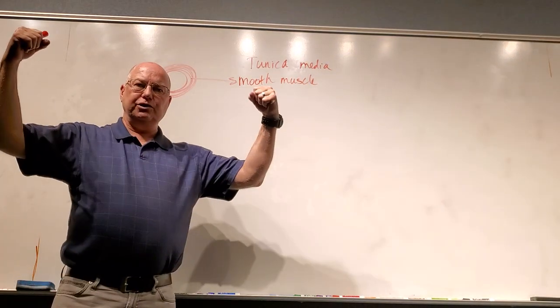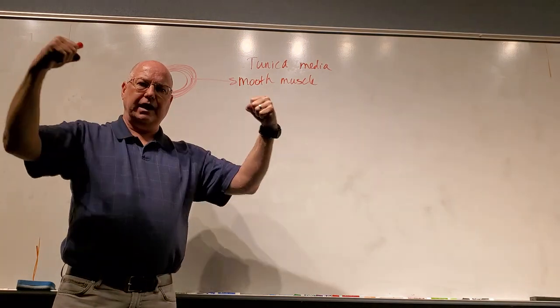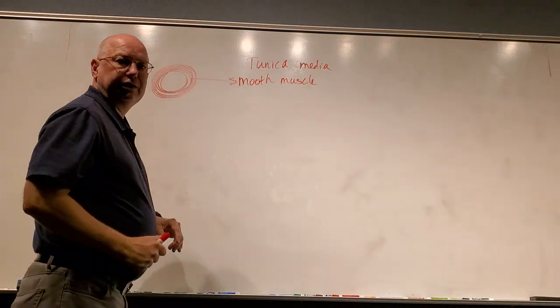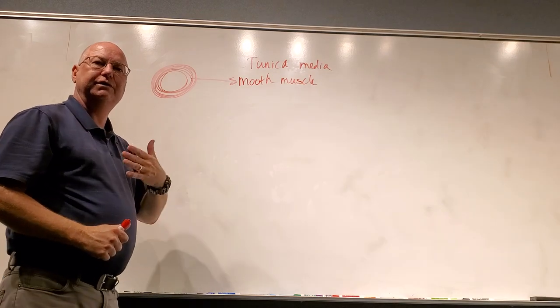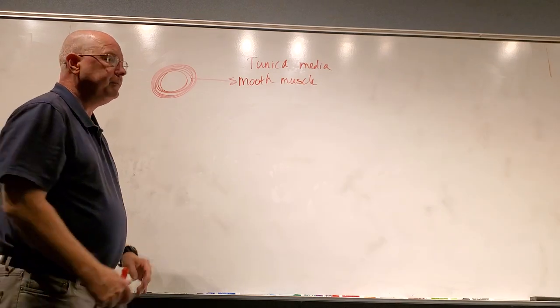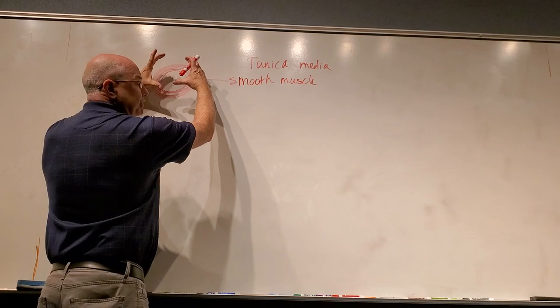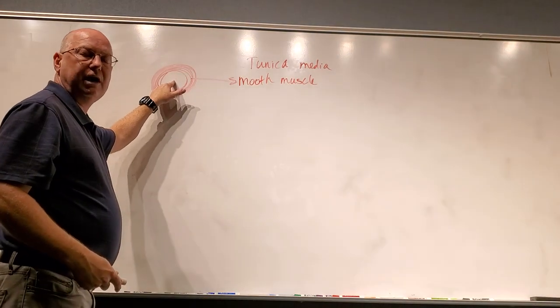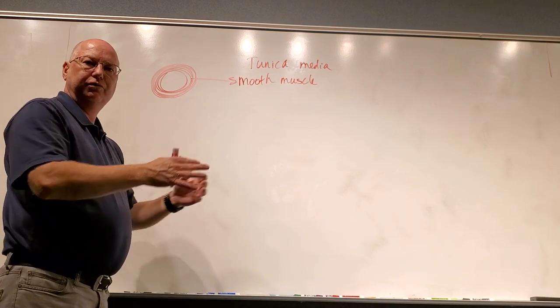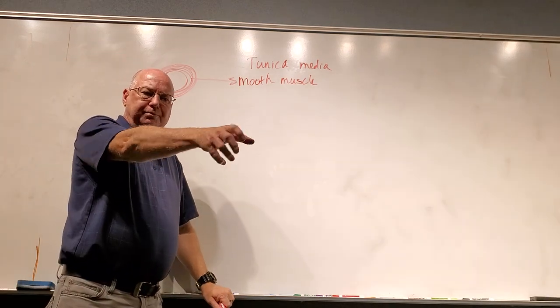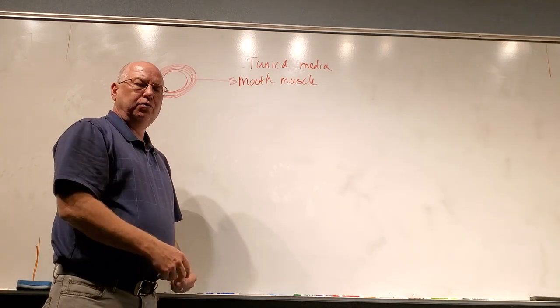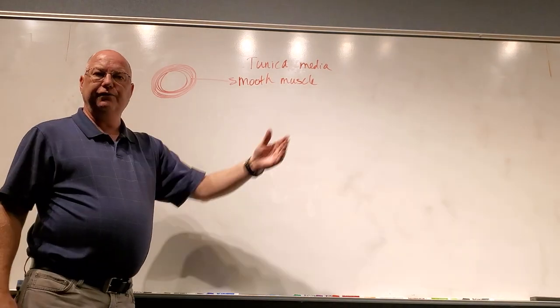That smooth muscle allows the arteries to constrict and dilate. When the smooth muscle contracts, the artery will constrict and decrease in diameter, therefore decreasing blood flow through that artery. If the smooth muscle relaxes, the artery will dilate, increasing the diameter of the lumen, the space inside, letting more blood flow through. This is like turning your faucet up or down or on or off on your sink or on your water hose, increasing the amount of flow.